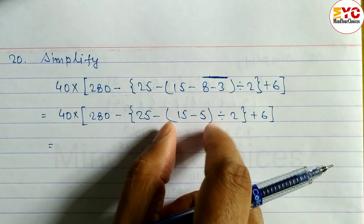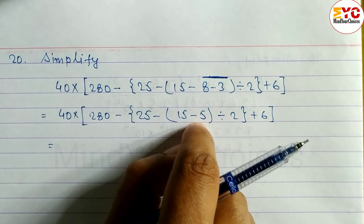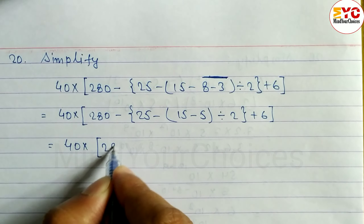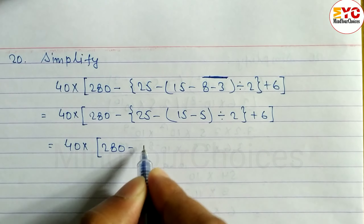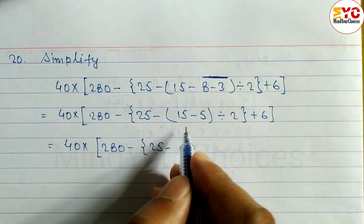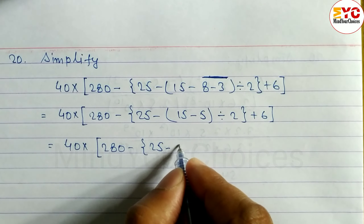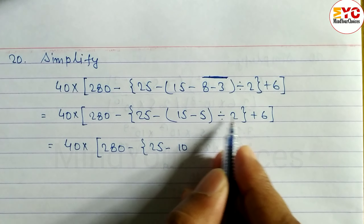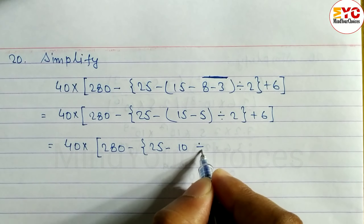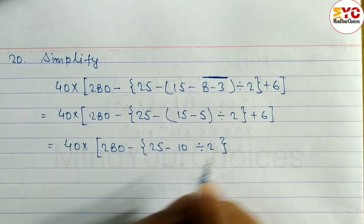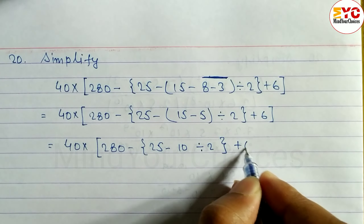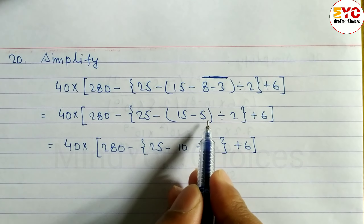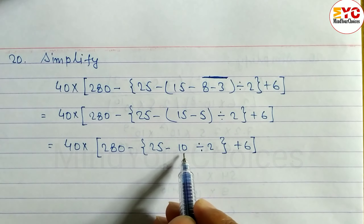Now, small brackets: subtract. We have 40 into 280 minus 25 minus — just subtract these two. When you subtract, we get 10. This is 10. Then divide by 2, plus 6 in bracket. Then the big bracket: this small bracket gives us 10.